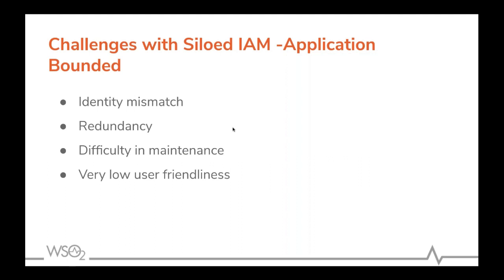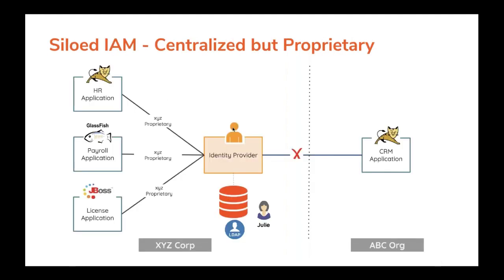Realizing this problem, XYZ corporation came up with a new deployment. They decoupled the IDP from each application and centralized it. Through proprietary APIs they exposed users to each of the applications. Now Julie just had to register herself in one IDP and could then use all applications in XYZ corporation. For a time this resolved the problems they faced with application-bounded IAM.